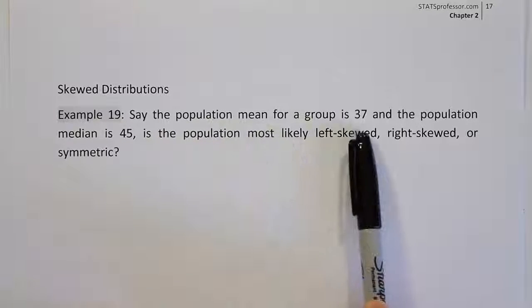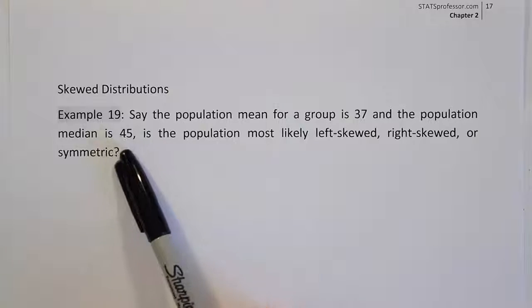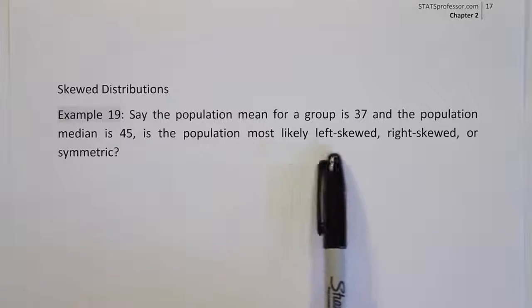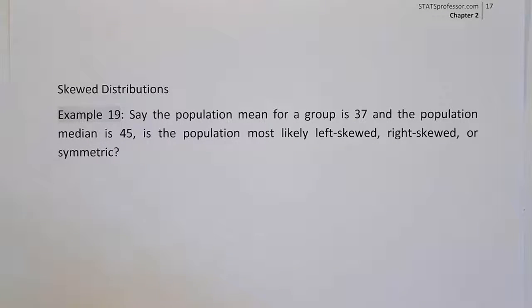Say the population mean for a group is 37 and the population median is 45. Is the population most likely left skewed, right skewed, or symmetric?